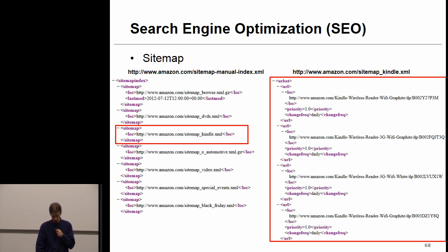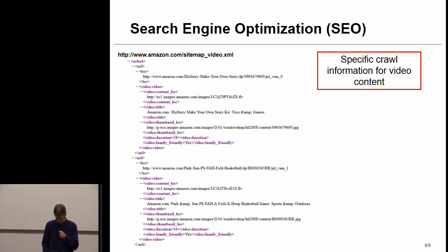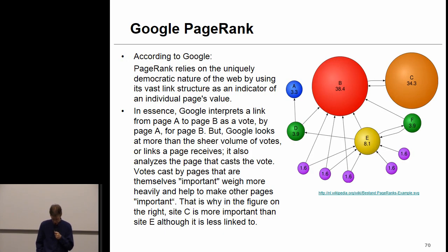You can see an example of the sitemap for Amazon — you see URLs, last modified dates, priority, and change frequency to the right, which can be daily, weekly, or monthly. For video content, there's more information you can provide to facilitate crawling: the content of the video, the title, the thumbnail location, the duration, whether it's family-friendly or not. By means of the sitemap, you're doing search engine optimization in a very efficient way.